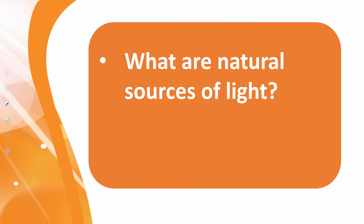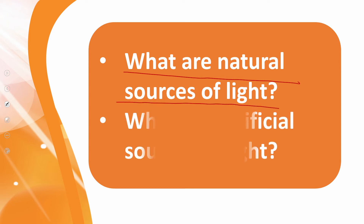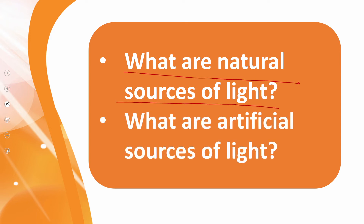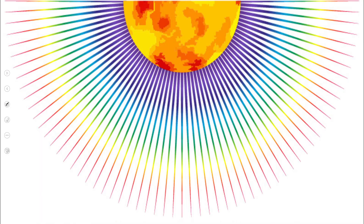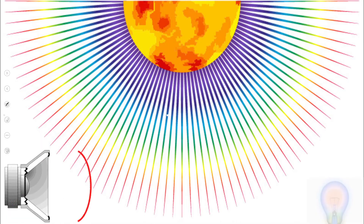Now is the time for evaluation. Quickly tell me: what are natural sources of light? Moon, sun, and stars are natural sources of light. What are artificial sources of light? LED bulbs, neon lights, sodium lights, and candles — these are all artificial sources of light.